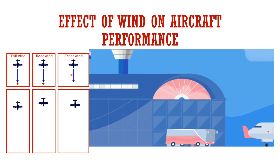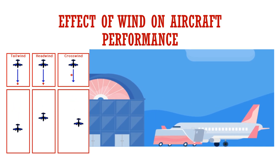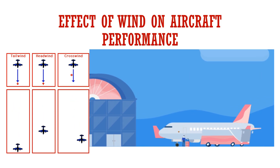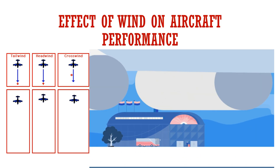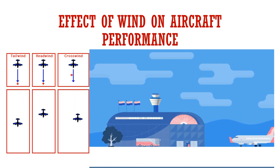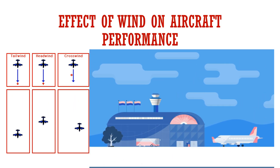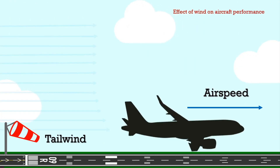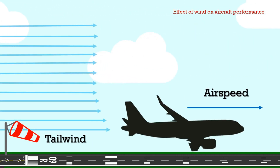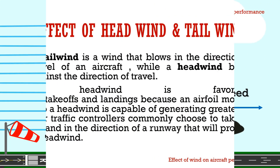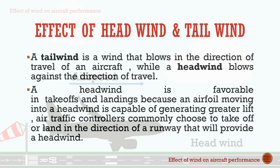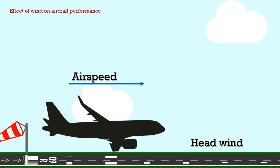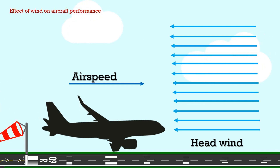We can choose a runway with the greatest headwind component and use the wind on our tail while flying to our destinations. Tailwind is a wind that blows in the direction of travel of an aircraft, while a headwind blows against the direction of travel of an aircraft.